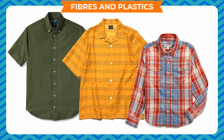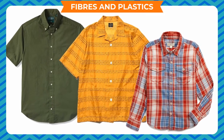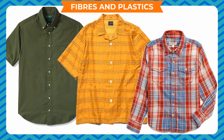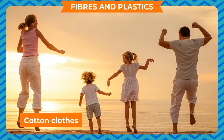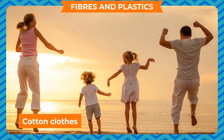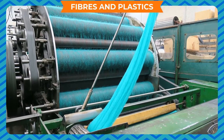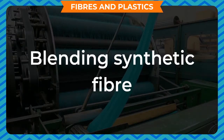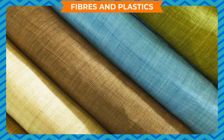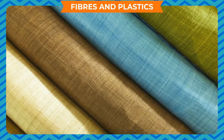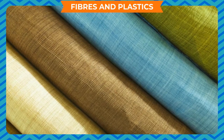The properties of one kind of fiber varies from others. That is why you wear woolen clothes in winters and cotton clothes in summer. Nowadays, clothes are manufactured by blending synthetic fiber in natural fibers. In this chapter, you will study various types of synthetic fibers and plastics in detail.